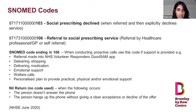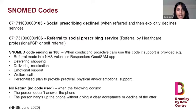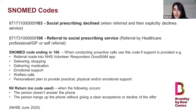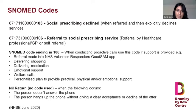For the purpose of today's tutorial we're going to refer to social prescribing declined as code 103, and referral to social prescribing service as code 106. Code 103 is used when you receive a referral and then you pick up the phone, try to call them, and they say they don't want to be seen by a link worker — they have explicitly verbalized that they do not want to be seen.